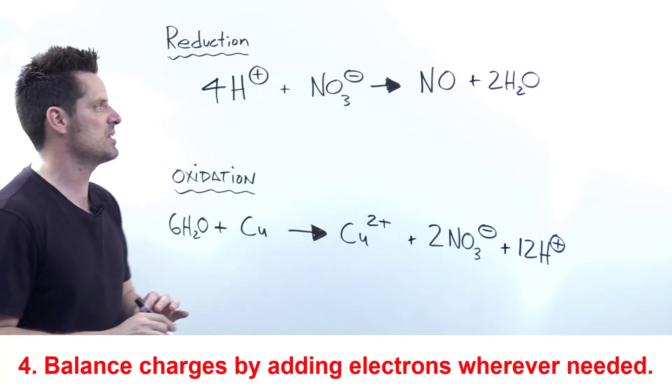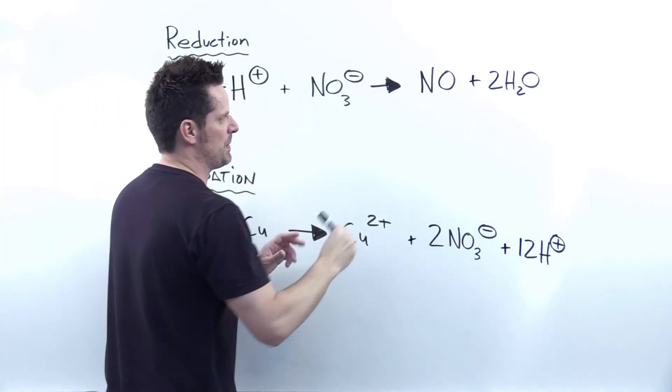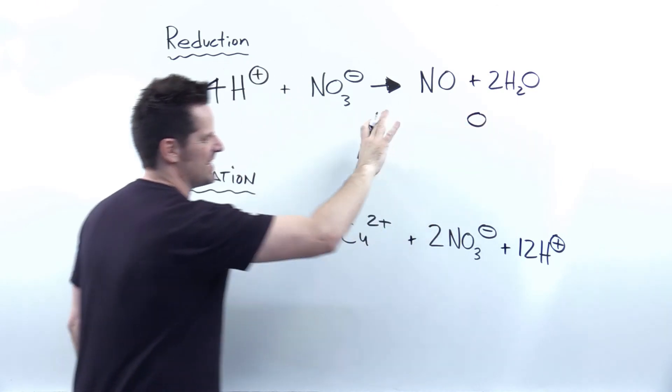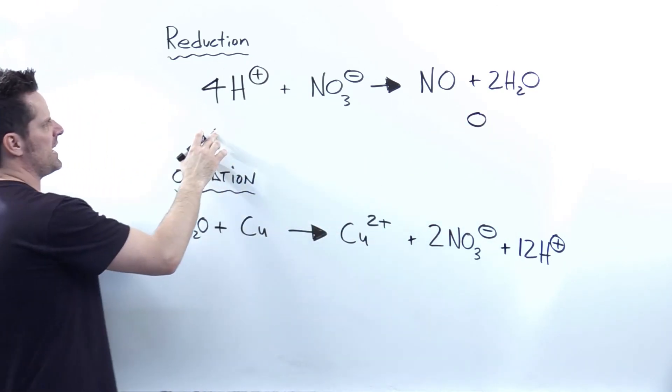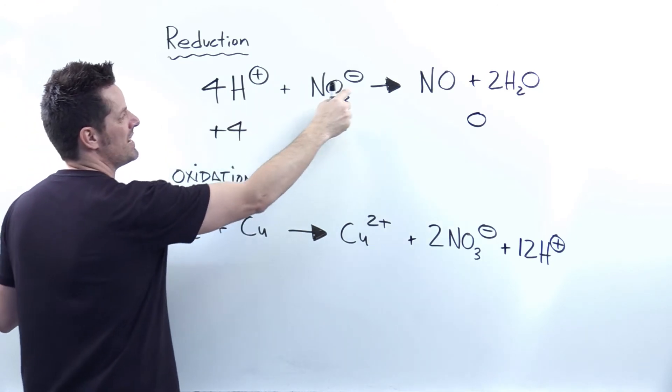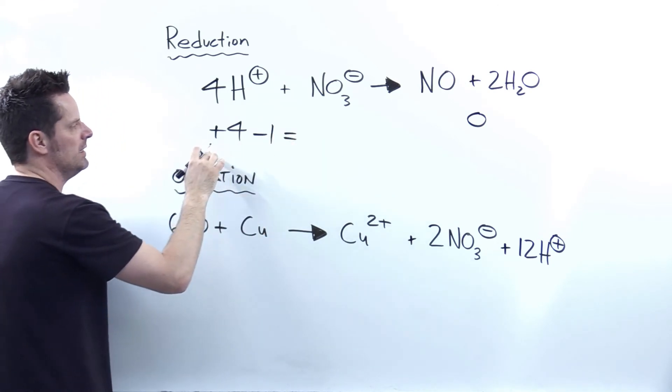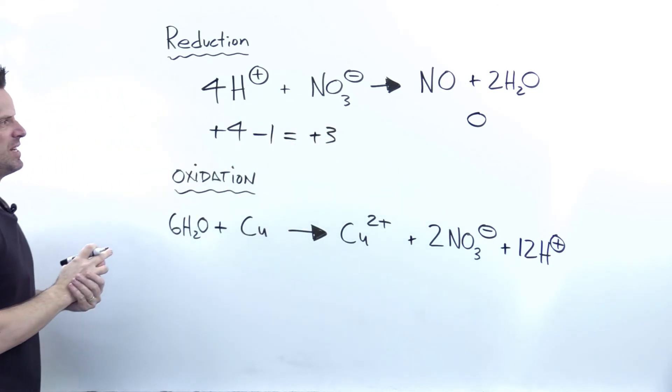That takes us to the next step, which is I balance out charges on each side of the half reaction by adding electrons wherever is necessary. On the top reaction, I have two zero charged or neutral species on the right. So my overall charge on the entire right side of the reaction is zero. On the left side, however, I've got four H pluses, which I'll just write down here. And I've got one nitrate, which has a minus one charge. So the overall charge on the left side of the reaction is four minus one equals plus three as it currently stands.